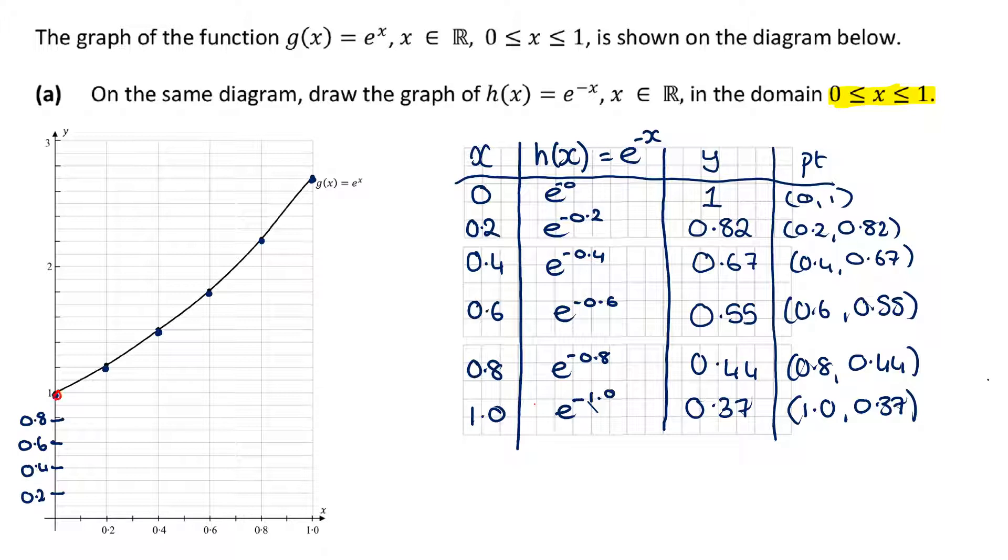The first point that we have is here, and you'll notice it's the same as h(x), so it's (0,1). The next is (0.2, 0.82), just a little bit above 0.8. The next one is (0.4, 0.67), just underneath 0.7. Then we have (0.6, 0.55), halfway between 0.5 and 0.6. Then we have (0.8, 0.44), roughly halfway between 0.4 and 0.5. The last one is (1, 0.37), just underneath there.